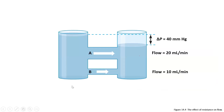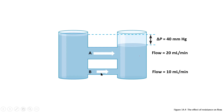Let's use this schematic to talk about resistance and how it changes with different factors. From side A to side B, we have two conduits. The pressure in the first container is higher than in the second, giving us a differential of about 40 millimeters of mercury. Although we have the same pressure gradient — the same driving force — the rate of flow through conduit A is 20 milliliters per minute, whereas through conduit B it's only 10 milliliters per minute. Why do we see a slower rate through conduit B despite the same driving force?